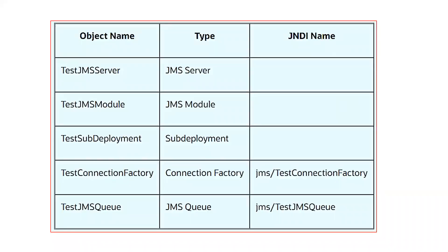What configurations are we going to configure in the WebLogic server for JMS? First, we will create a JMS server — I'll give it the name 'test JMS server.' I'm assuming you already have a domain running with one admin server and one managed server. After that, we will create a JMS module with the name 'test JMS module.' Then inside the JMS module, we will create a sub-deployment with the name 'test sub-deployment.'